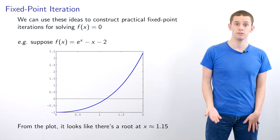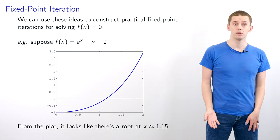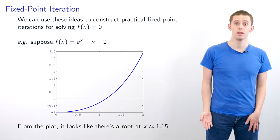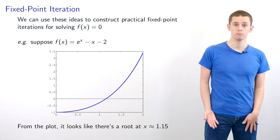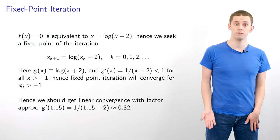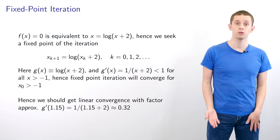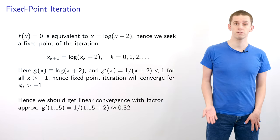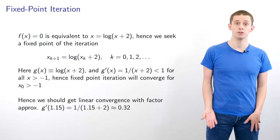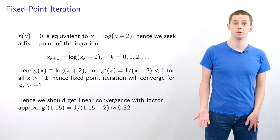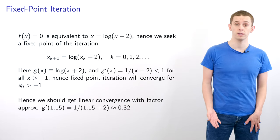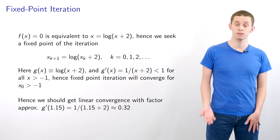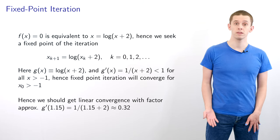We can use these ideas to construct practical fixed point iterations for root finding. As an example, let's look at f(x) = e^x − x − 2. Plotting this function shows a root around x ≈ 1.15. Rearranging f(x) = 0 gives x = log(x + 2), so we seek a fixed point of x_{k+1} = log(x_k + 2). Here g(x) = log(x + 2), so g′(x) = 1/(x + 2), and |g′| < 1 when x > −1.